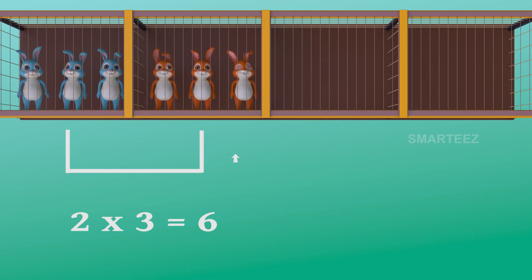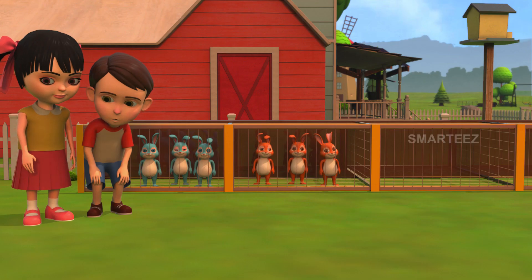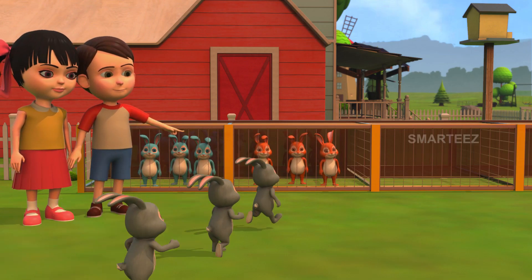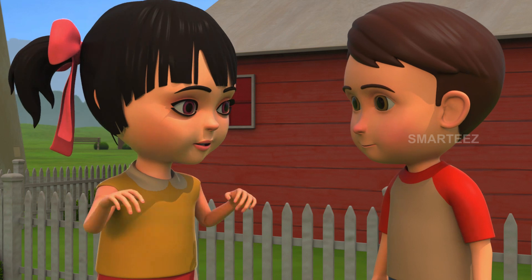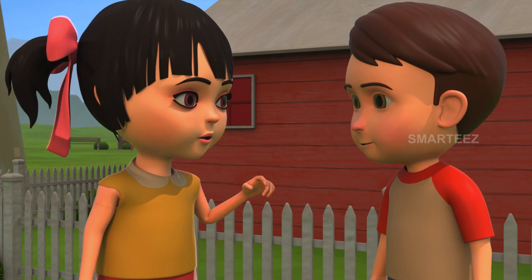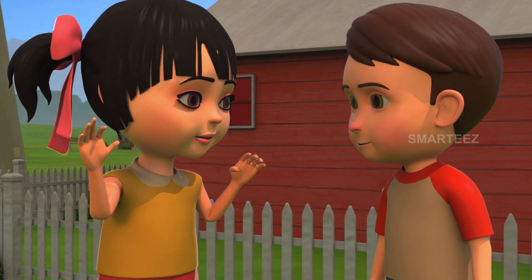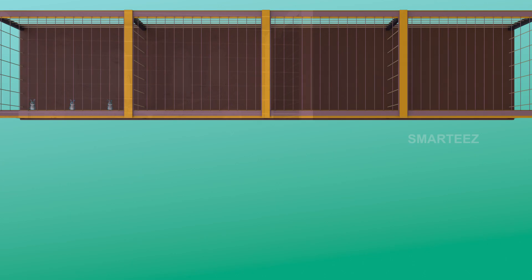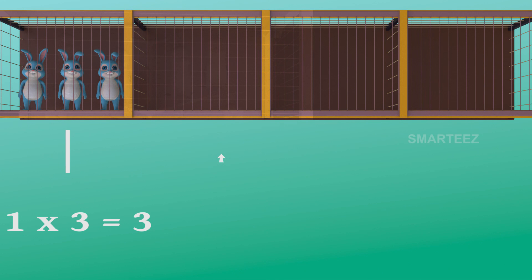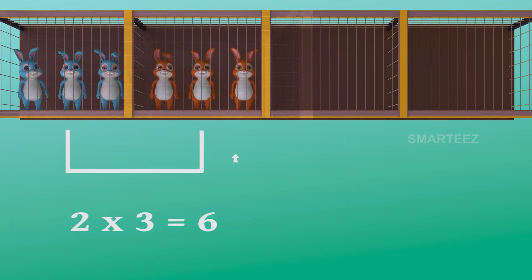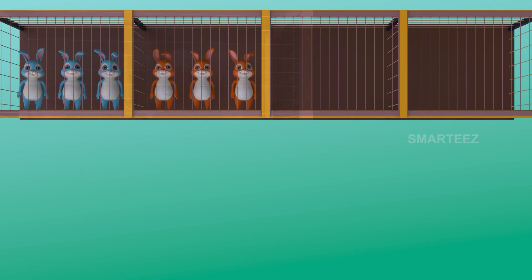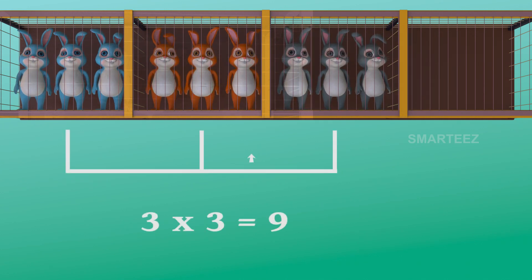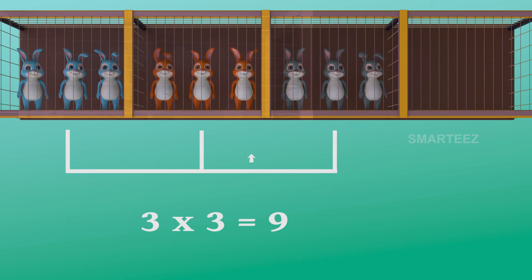There were six in two cages already. Now there's one more cage of three bunnies to make it nine. Yes, three threes make it nine. The first set had three bunnies, and when the second set of three bunnies was added to the first set it became six. Now the third set of three bunnies made it nine. So three sets of three bunnies make it nine bunnies.